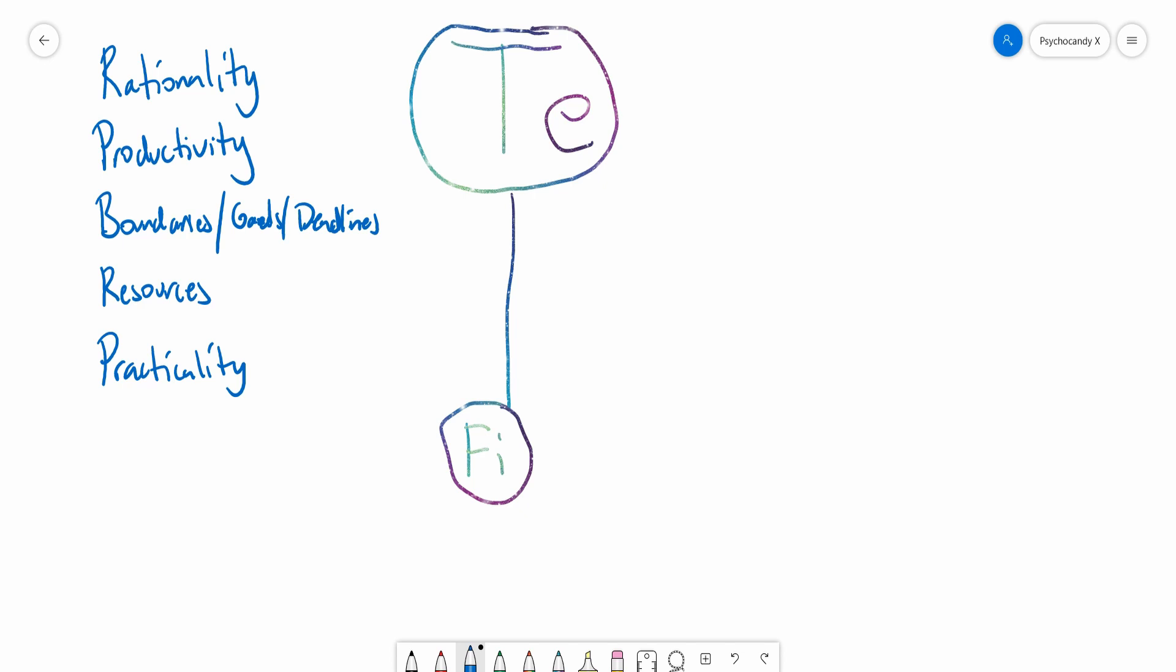Sometimes the way to fix something can be so obvious that other people just miss it, and Te will just have this solution to any source of problem. As far as this axis, we can look at extroverted thinking as being logical and objective.